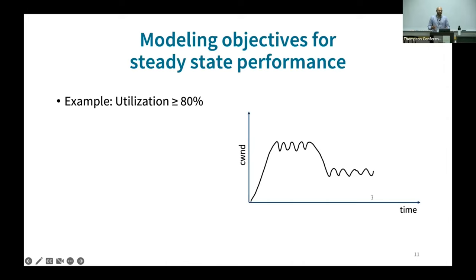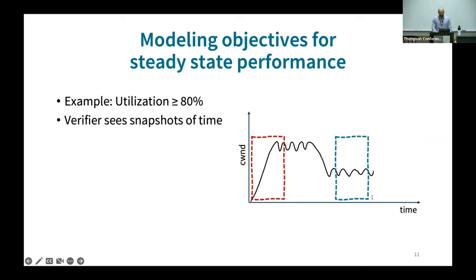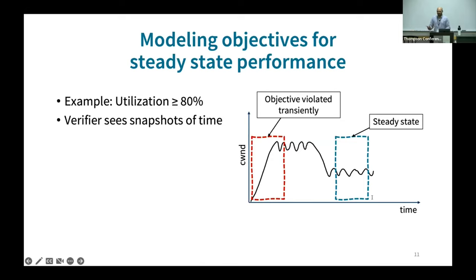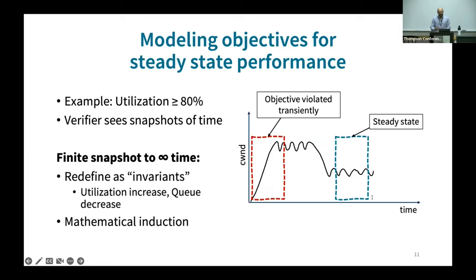Moving on to objectives: typically in congestion control we care about performance when a CCA has converged to steady state. However, in the CGIS loop, our verifier only sees finite snapshots of time, and objectives can be violated transiently — for instance, at flow initialization, it may take the CCA some time to learn its fair share of bandwidth. So the verifier needs a way to check properties about infinite execution using only finite snapshots. To get around this, we redefine our objectives as invariants necessary for the CCA to first achieve convergence and then meet its objectives, and use mathematical induction to prove properties about infinite execution.